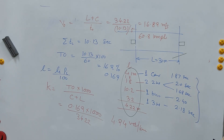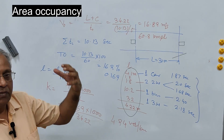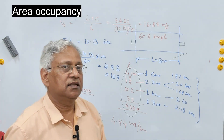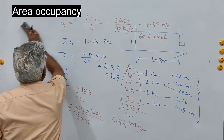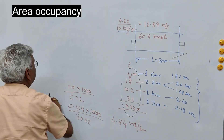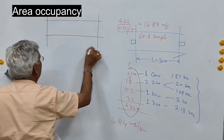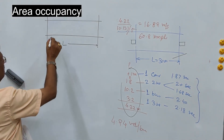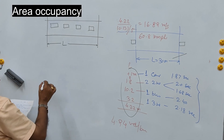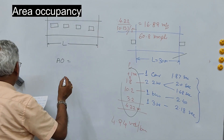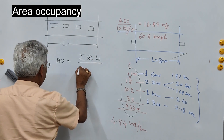The second surrogate measure of density is area occupancy. Area occupancy is considered to be better than time occupancy because it considers speed as well as traffic composition. Area occupancy is defined similarly to time occupancy, with the difference that we take the area of the vehicle rather than its length. If this is a road with a trap of length L, the area occupancy is the proportion of the road area which remains occupied by vehicles.